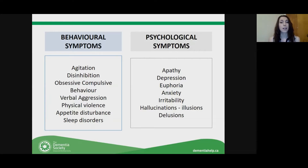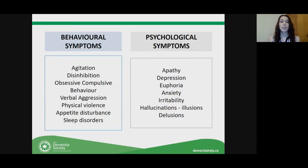Appetite disturbances can occur for a myriad of factors — a person's tastes might actually change because of dementia, so they might not like the same things they used to, or they could develop rituals around eating. Sleep disorders happen as well. The person's internal clock might be off — staying up later, waking up earlier, wandering during the night, disoriented about what time it is. A lot of the time these behaviors have some underlying psychological cause.